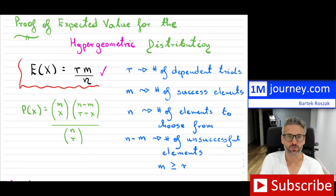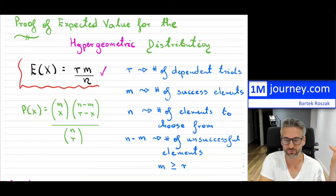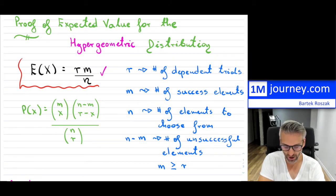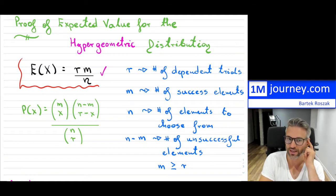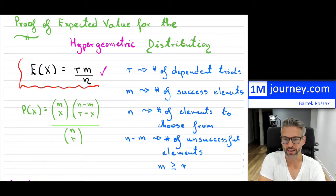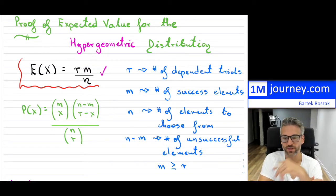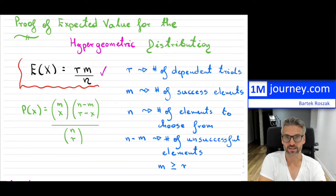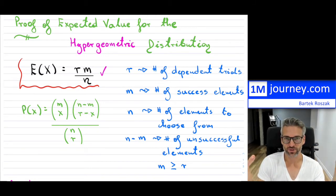Now, depending which textbook you pick up or which teacher you have, these R, M, N could be any variables that someone chooses. I've defined them here on the right. R is the number of dependent trials that we're going to take on. M is the number of success elements that you have. N is the total number of elements to choose from. And then N minus M is going to be the number of unsuccessful elements — we either have success or failure.